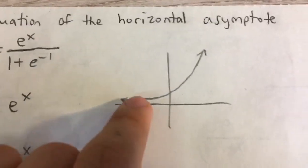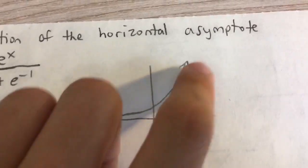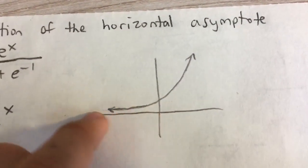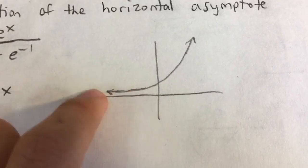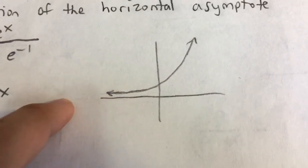And so if you remember exponential functions like e to the x, they look like this. Their end behavior, in other words, their horizontal asymptote is as x approaches negative infinity. As it keeps going to the right, it approaches some value.